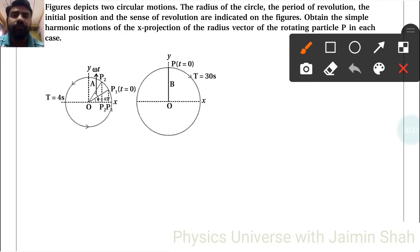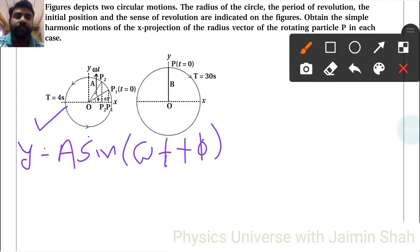So for first figure, T is equal to 4 seconds. Now Y is equal to simple formula A sine omega T plus φ. So omega T.